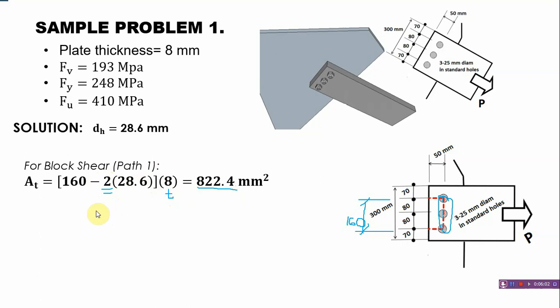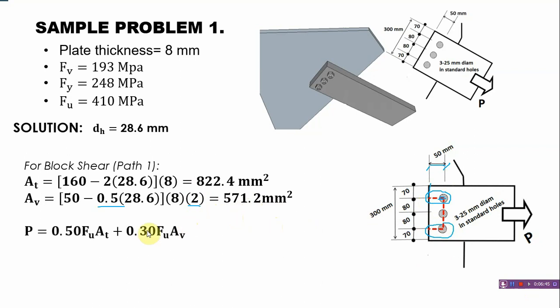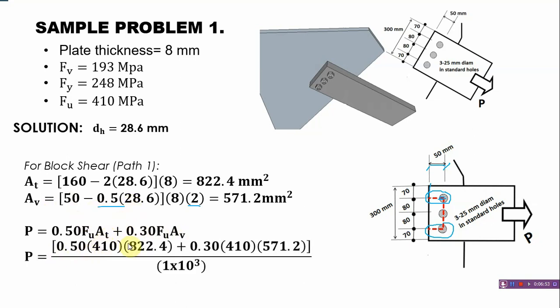Let's get the area for our shear side. It's 50 minus 0.5, which is half the diameter: 0.5 × 28.6 × 8 thickness, times 2 because we consider both sides. That's 571.2 square millimeters. Our formula for block shear is 0.50F_u A_t + 0.30F_u A_v. Substituting, we get the answer of 238.85 kilonewtons.